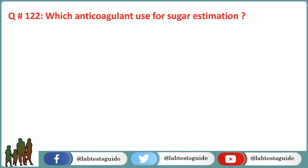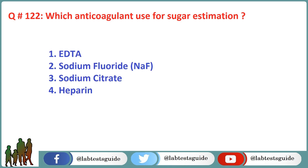Next question is 122: Which anticoagulant is used for sugar estimation? Option 1: EDTA. Option 2: Sodium fluoride. Option 3: Sodium citrate. Option 4: Heparin. The correct answer is Option 2: Sodium fluoride.